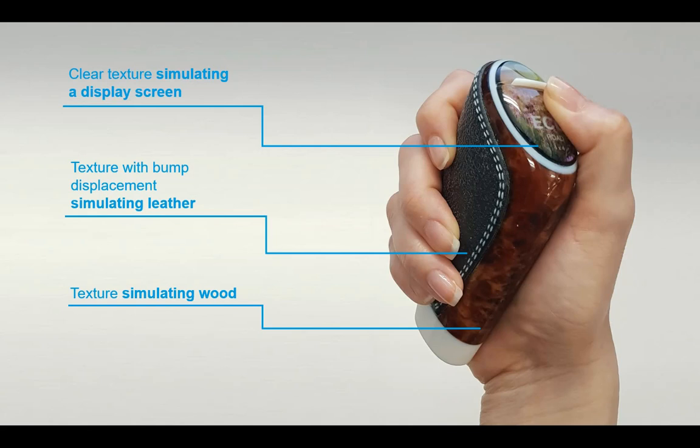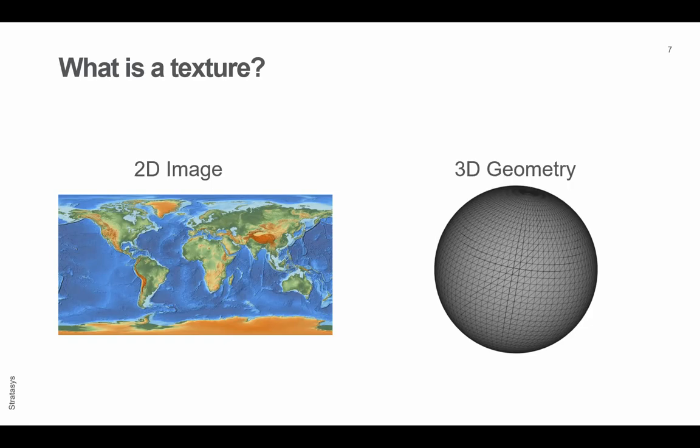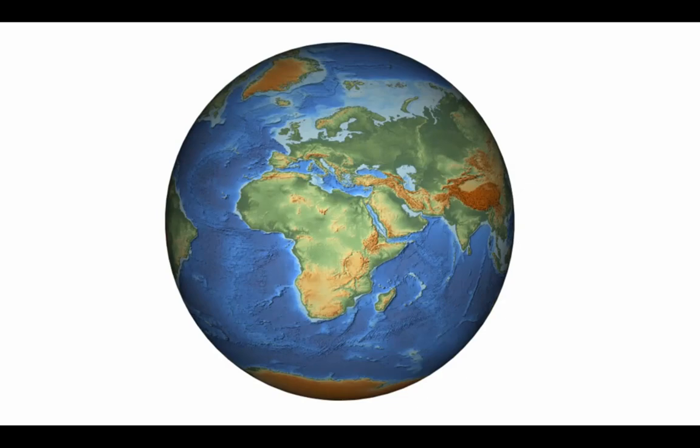So how is the texture applied? What is a texture? A texture is a 2D image - it could be a PNG, a JPEG, really any 2D image format that is applied onto 3D geometry. Here on the right hand side I've got a sphere and on the left hand side I've got a picture of the world, and the two images applied together will create a 3D globe.